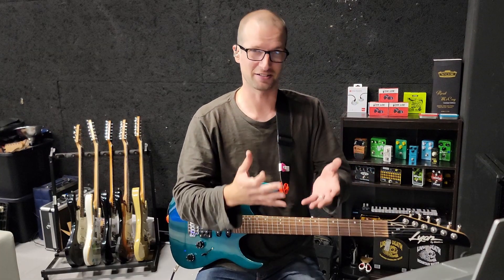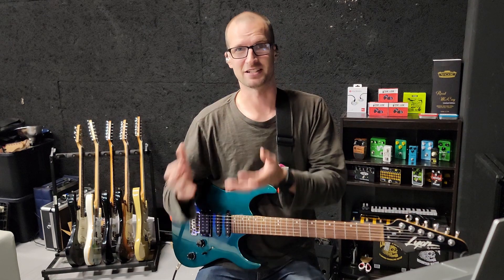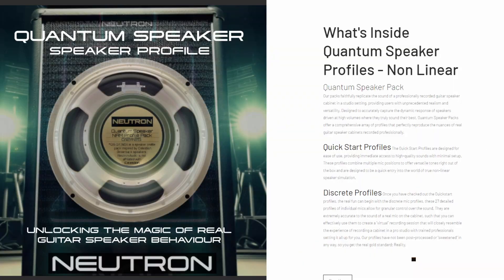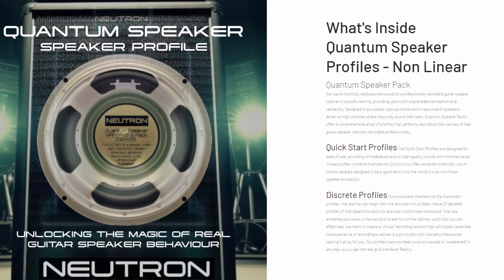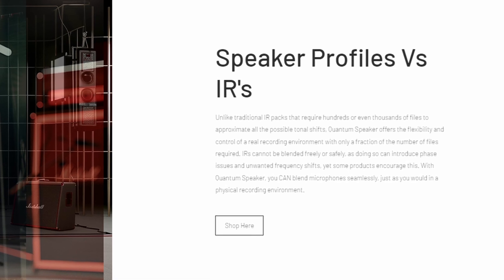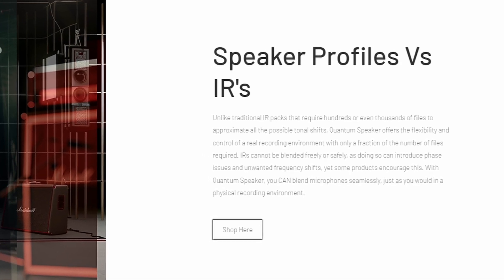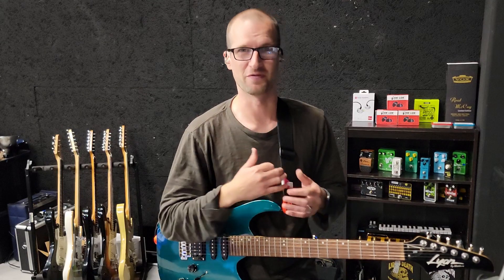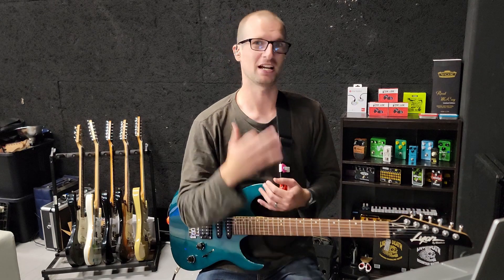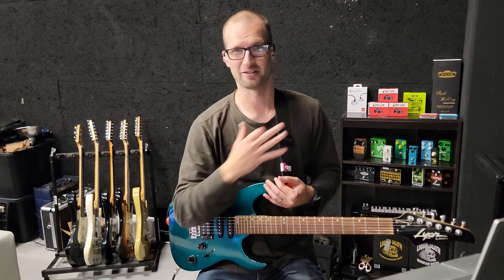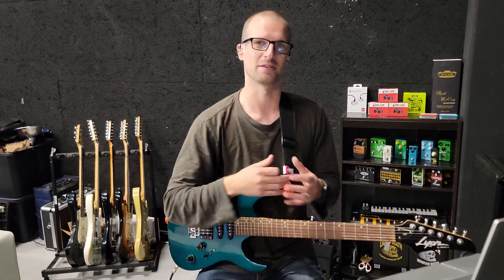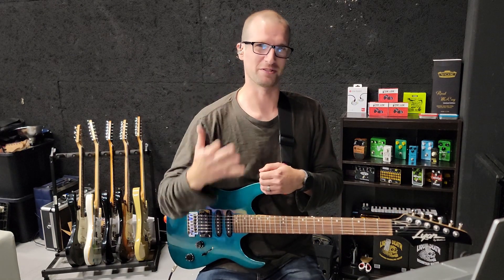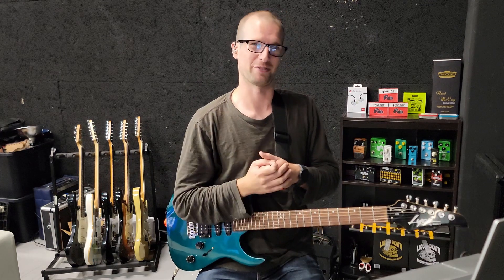So using these profiles is essentially identical to actually micing up the cab the way they did. This is the Quantum Speaker by Neutron Studios. In this video, we're going to be looking at the profiles for the Celestian Greenback. I think the V30 is out now, but I don't have that one yet — we'll do a video on that when we get it. And if you want to do a deep dive on the Quantum Speaker and all these profiles, I'll have a video in the description.